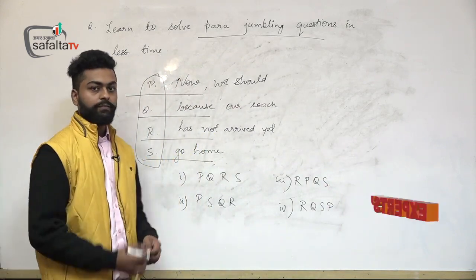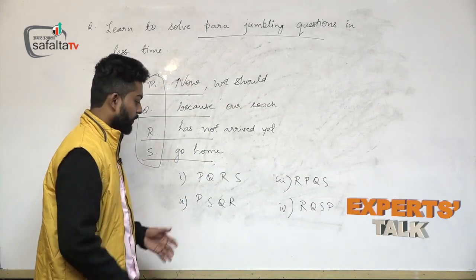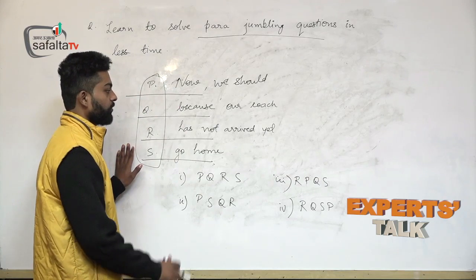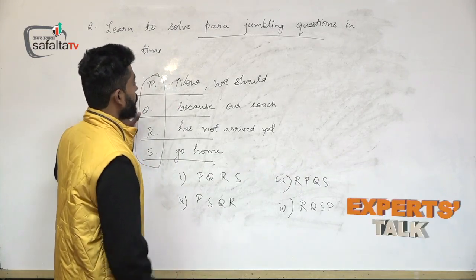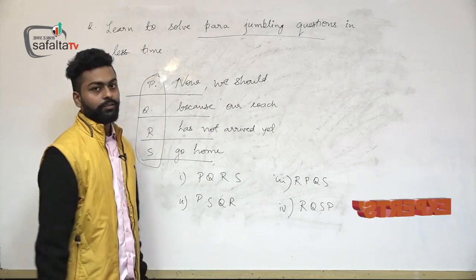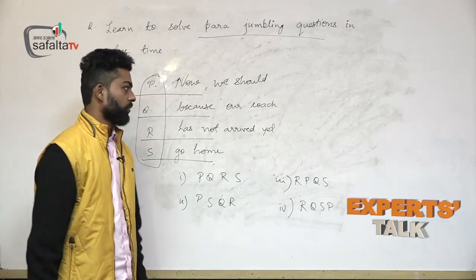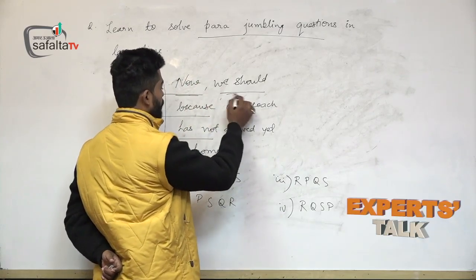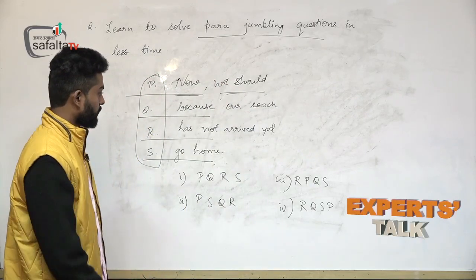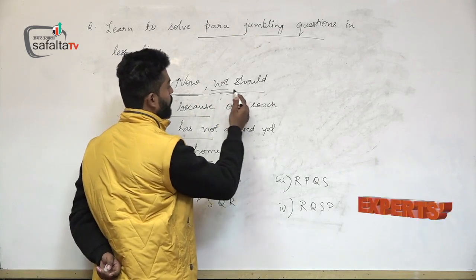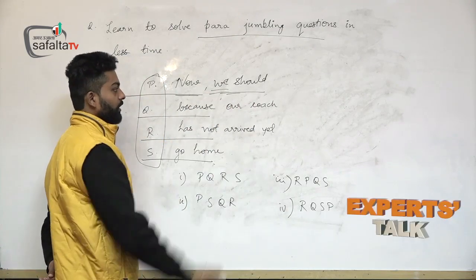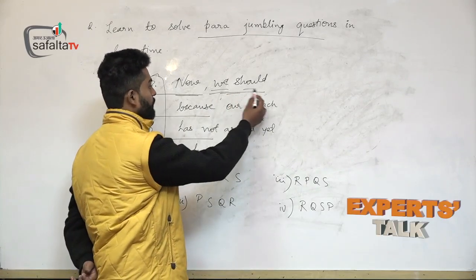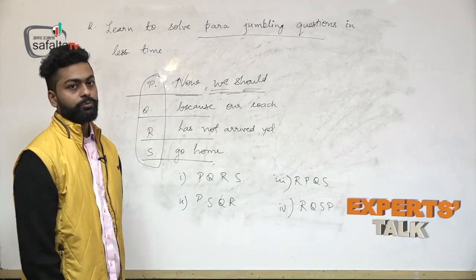I will not advise you to look at the options first because the options might confuse you. So whenever you are looking at a jumbling question, see the correct sense of the sentence — how will you make this sentence meaningful? The P part mentions 'now we should.' If we take this as our first part, then we look at what is happening next. If this is the subject, then there should be a helping verb after it. The helping verb here is 'should.'